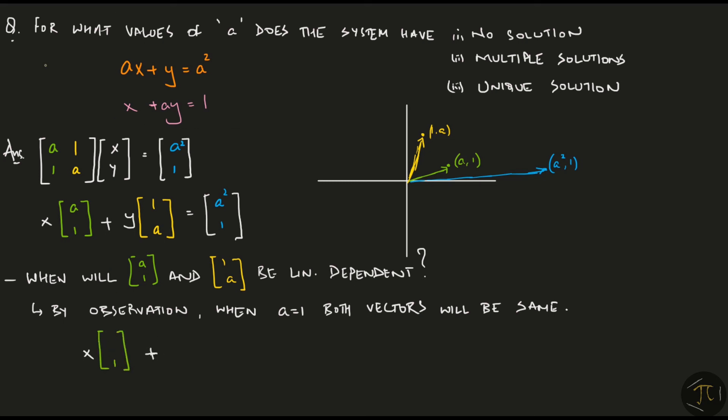you can see that even the output vector becomes the same as the input vectors. What this means is that the output vector lies in the span of the input vectors, and so we must have multiple solutions for a equal to 1.